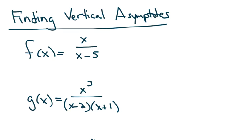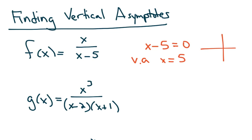Let's start by talking about vertical asymptotes. Vertical asymptotes occur anywhere the denominator of the fraction equals 0, because we can't have 0 in the denominator of a fraction. So to find the vertical asymptote, you take the denominator, set it equal to 0, and solve for x. That would be the vertical asymptote — meaning if you were to graph this, there would be an invisible line right there that the graph didn't cross.